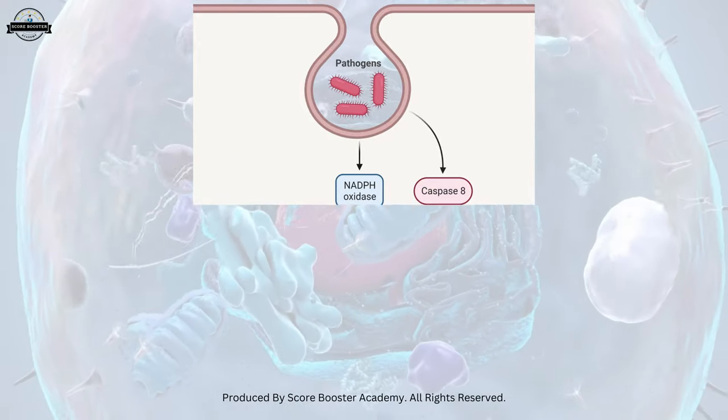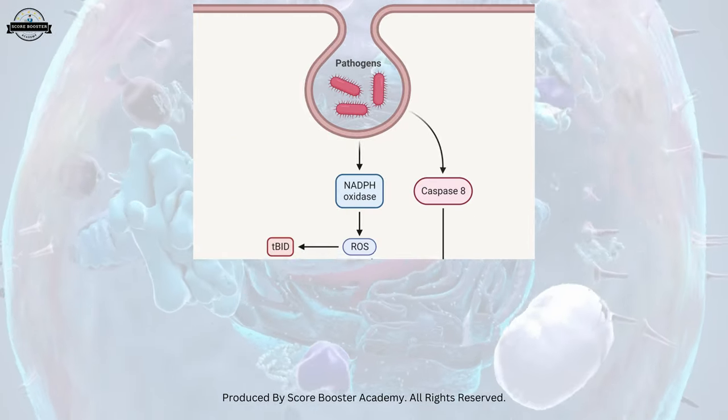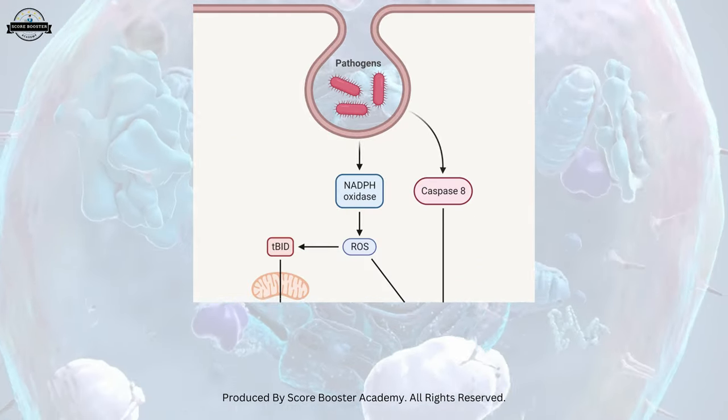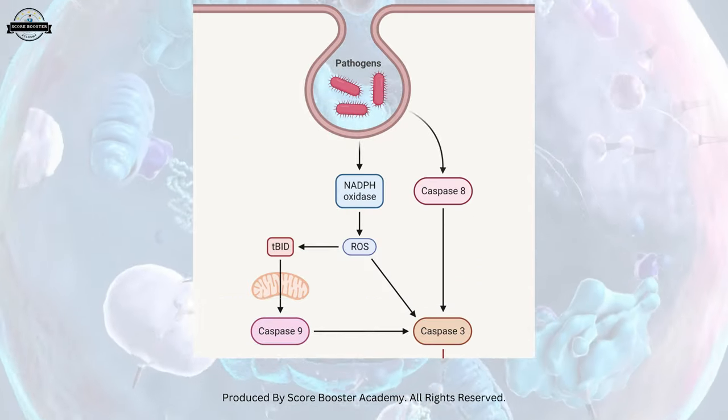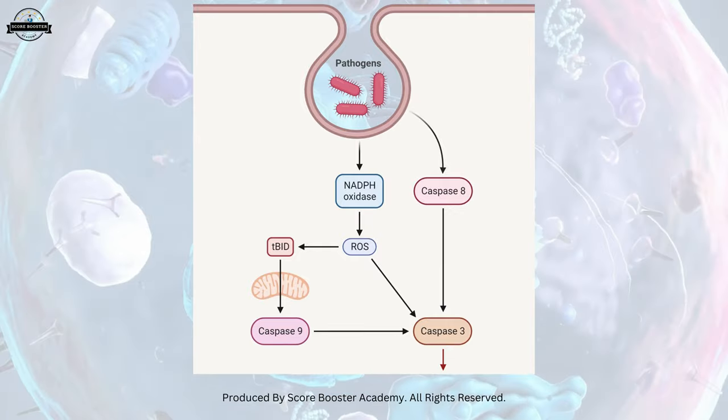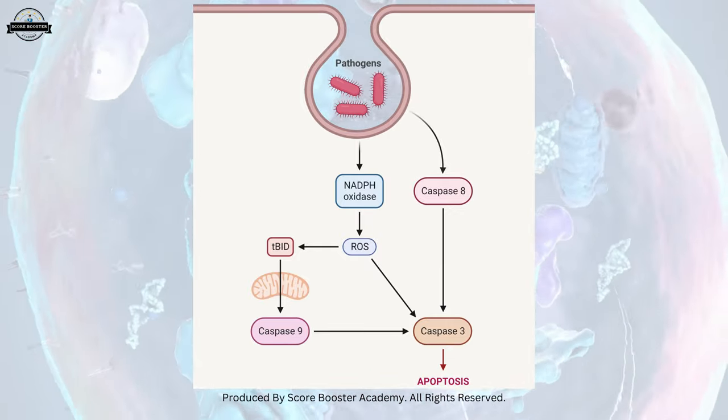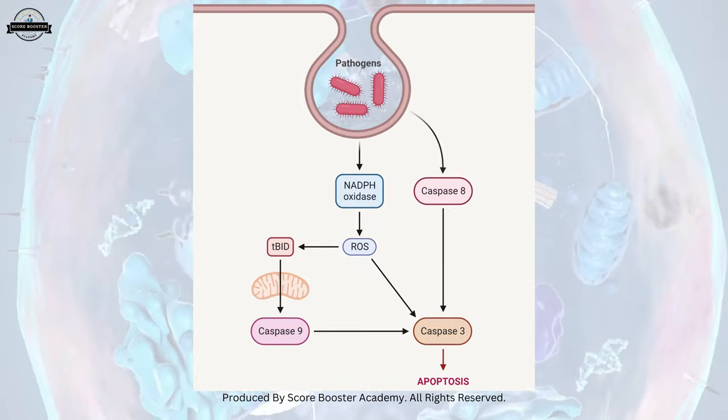Mitochondria play a pivotal role in programmed cell death, or apoptosis. They release specific proteins that initiate a cascade of events, ultimately leading to cell death.